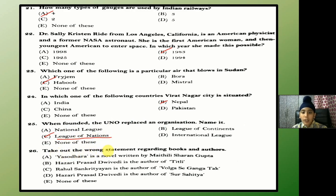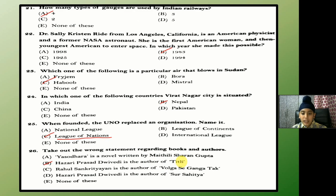Take out the wrong statement regarding books and authors. The answer is B — Hazari Prasad Dwivedi is the author of Titli. Actually, Jaya Shankar Prasad is the author of Titli.